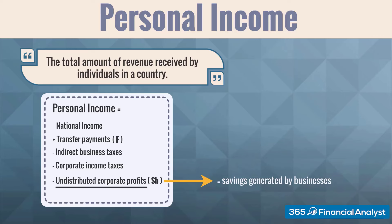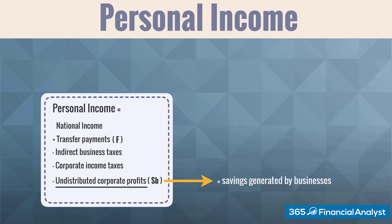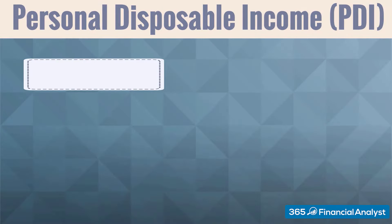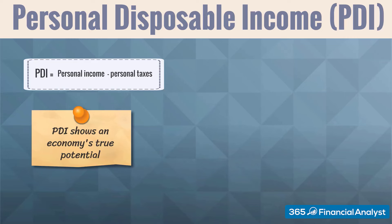We are almost done. The main reason we need to know personal income is to be able to calculate personal disposable income, or PDI. It is calculated as personal income excluding personal taxes. Personal disposable income represents the household's money left for spending after income taxes. It is a key economic indicator — the after-tax income of the whole population shows the true potential of the economy. The more personal disposable income consumers have, the more they spend on goods and services, and hence the higher the GDP measured per the income approach.